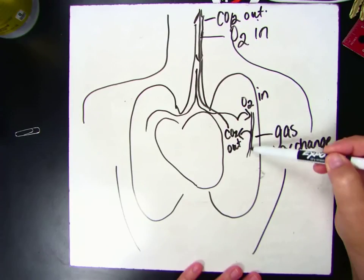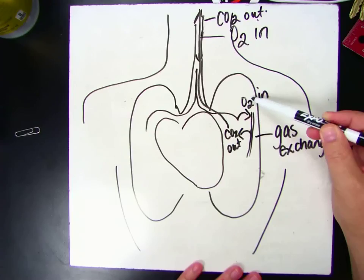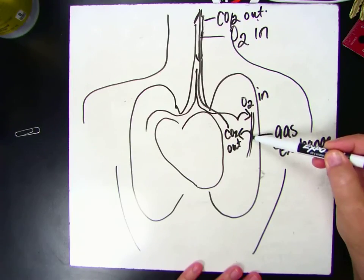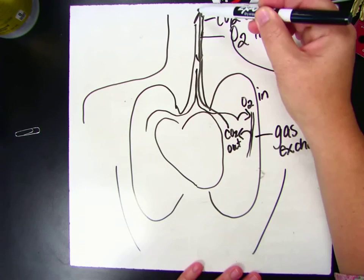So the blood that's running through the lungs, oxygen is going into that blood to carry it to the cells from the lungs. And carbon dioxide is coming out of the blood and going into the lungs so that we can breathe it out.